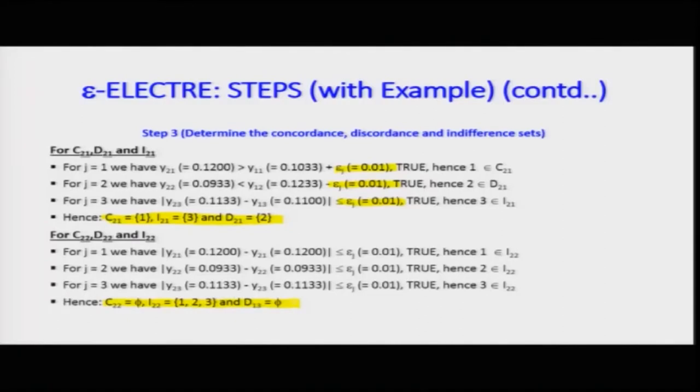Moving to C23, D23, I23, these are the values in the 2,3 cell of the overall matrix, where each cell in the 3×3 matrix has elements corresponding to C, D, and I. The cell 1,1 would have C11, D11, I11; cell 2,2 would have C22, D22, I22; and the 3,3 cell would have C33, D33, I33.